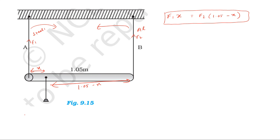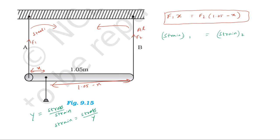For the second case, strain in the first wire — steel wire — equals strain in the second wire — aluminium wire. We know strain equals stress divided by Young's modulus. So strain equals stress divided by Young's modulus in the first wire equals the same for the second wire. This gives F1 divided by (A1 × Y1) equals F2 divided by (A2 × Y2), where Y1 is the Young's modulus of steel.